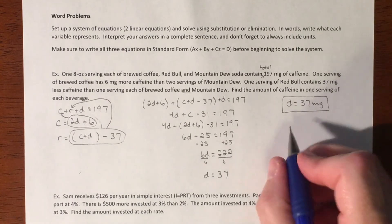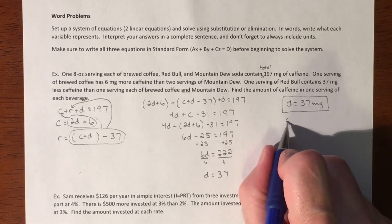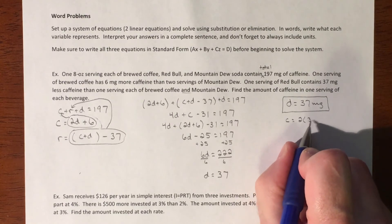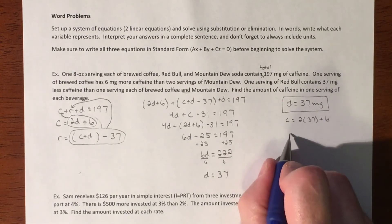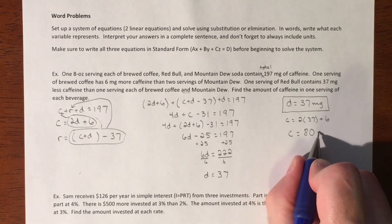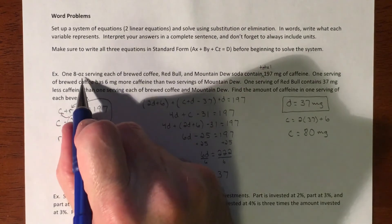And then to figure out C, our C value is going to equal two times the Dew plus 6. So if you do the math on that, our coffee is 80 milligrams of caffeine for an eight ounce serving.